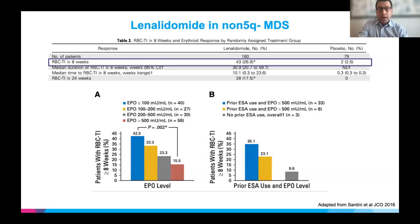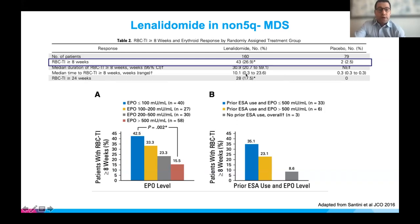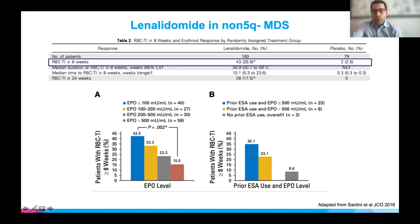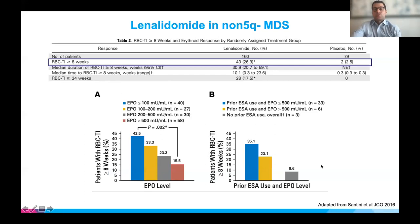Lenalidomide has also been tested in patients without a 5q deletion in a randomized controlled trial, showing improvements in about a quarter of patients — red blood cell transfusion independence for greater than eight weeks. However, many patients didn't enjoy transfusion freedom for even a year. Patients with a high erythropoietin level are much less likely to respond than those with a low erythropoietin level. So lenalidomide can also be used in patients who don't have a 5q-minus, particularly those with a low erythropoietin level.